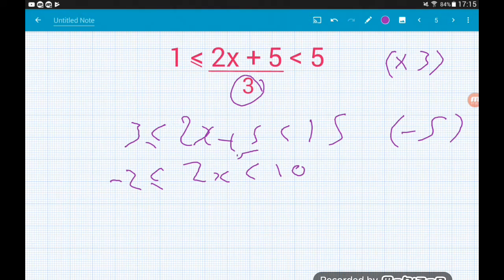So now we've got 2x is greater than or equal to minus 2, but strictly less than 10. So for our final move, we need to divide by the 2 on the x. So minus 2 divided by 2 is minus 1, which is less than or equal to x, which is strictly less than 5.